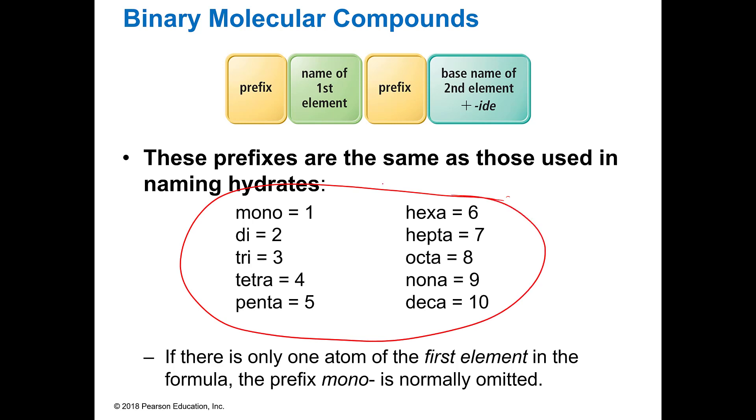We're going to be using prefixes to tell us how many of each atom or element is in the formula. And the one caveat to this is that if there's only one in the first element that you're writing in the formula, you do not have to use mono. It's understood that if you don't have anything, that it's mono. Now, if it's in the second part of it, you do have to write the mono.